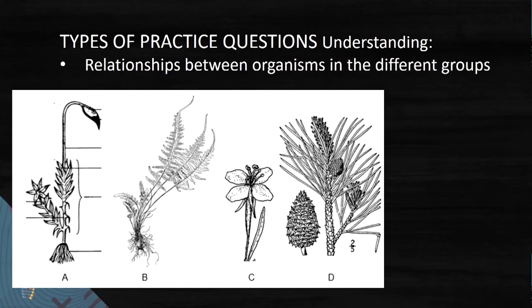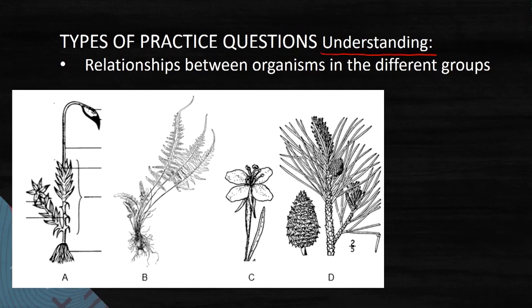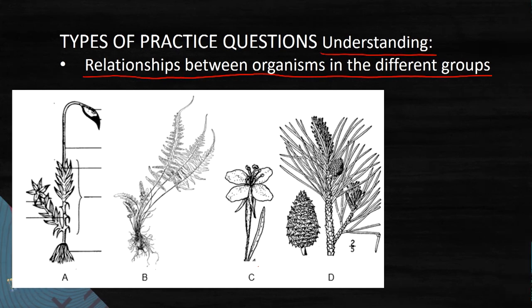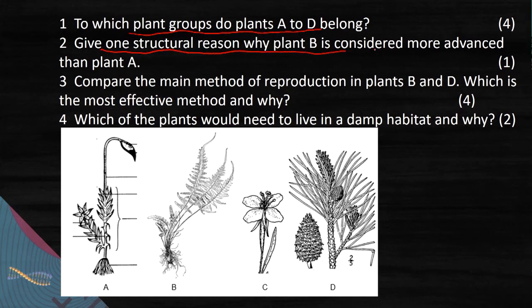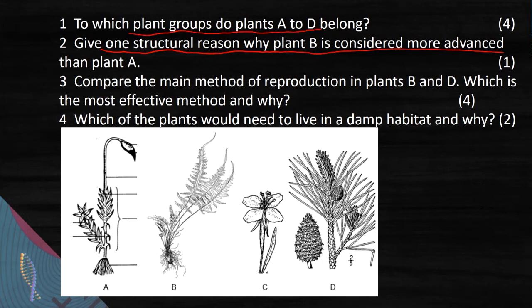Not all questions are on recall — many questions test your understanding of the relationships between different organisms. For example, we're given four plants from different plant groups, and you will be asked questions on them. Always starting off with: which plant groups do they belong to? Bryophytes, pterophytes, angiosperms, gymnosperms. Then you will be asked why plant B is more advanced than plant A. A is a moss, B is a fern, and the main reason is that ferns will have xylem and phloem — they will have tissues, and root stems and leaves.